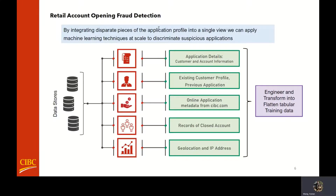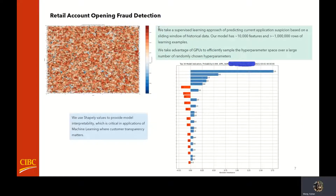Once you have that dataset, it's possible to apply heavier machine learning machinery to look for a signal. Our model has over 10,000 features and a single training dataset could potentially have millions of rows of learning examples. One of the most important things is to efficiently scan the hyperparameter space of the model to discover the optimal hyperparameter points. We take advantage of GPU computing to do this — the model we rely on is XGBoost, which has well-supported GPU computing.